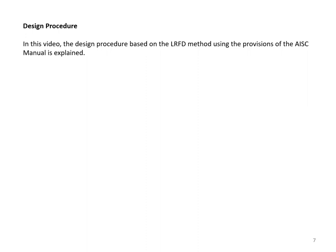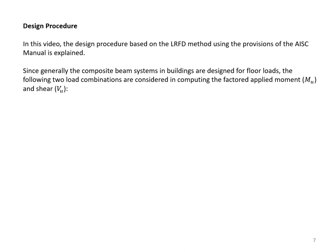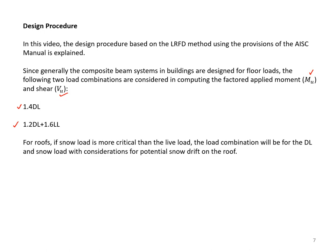The design procedure in this video is based on the LRFD method using provisions of the American Institute of Steel Construction Manual. Since composite beam systems in buildings are generally designed for floor loads, two load combinations are considered: 1.4 times the dead load, and 1.2 times the dead load plus 1.6 times the live load. For roofs, if snow load is more critical than live load, the load combination will include dead load and snow load with considerations for potential snow drift, which typically follows a triangular or trapezoidal distribution.